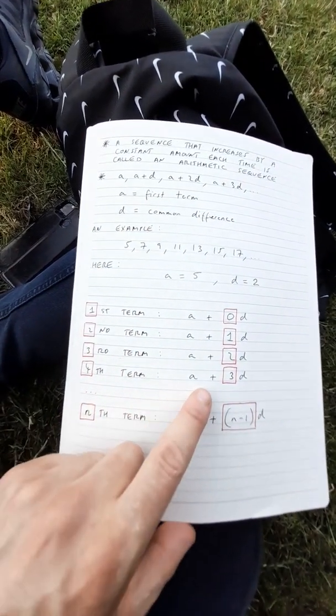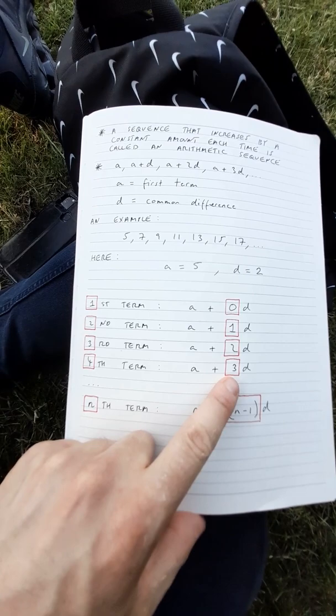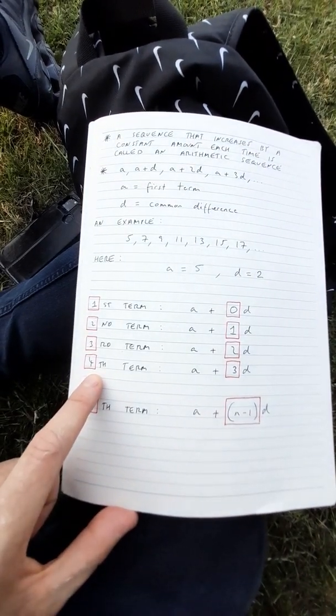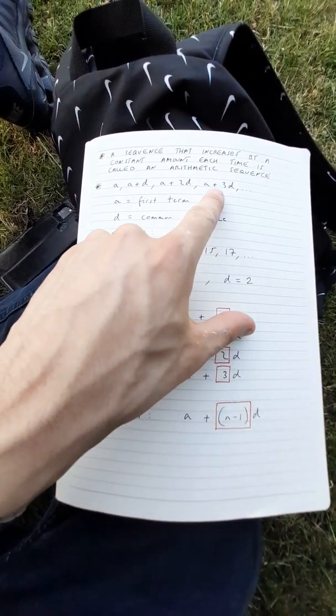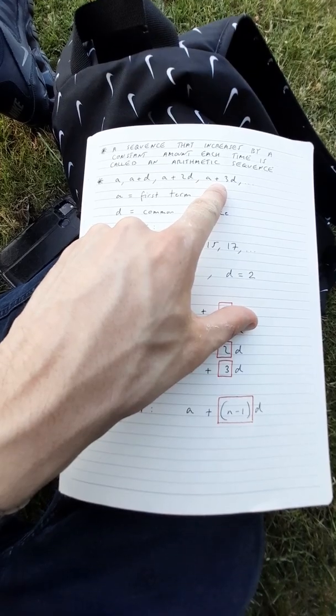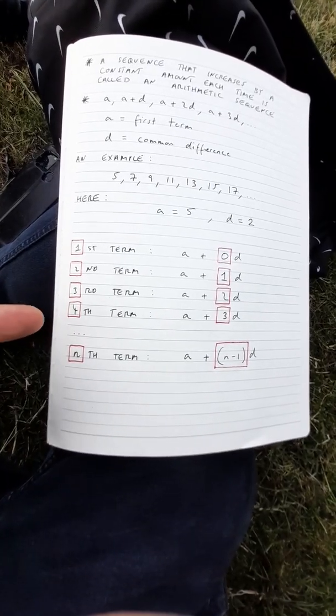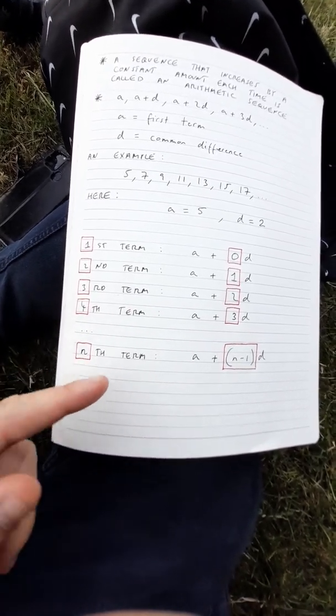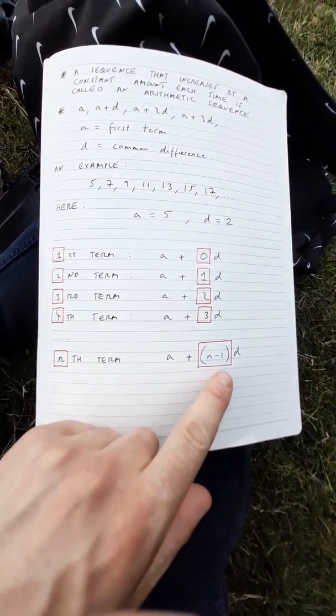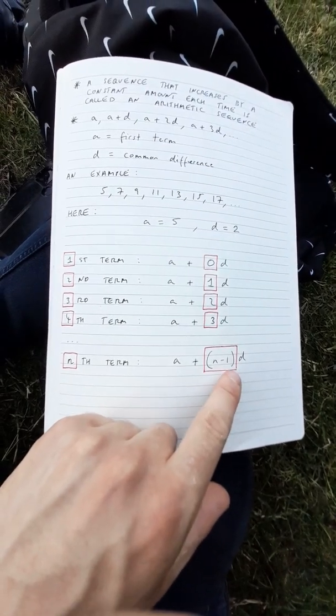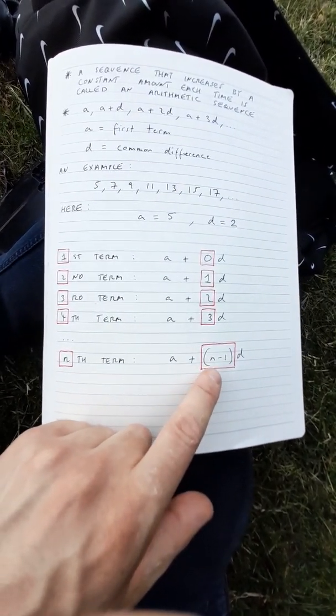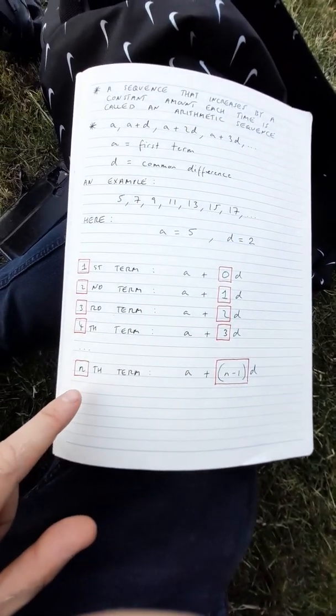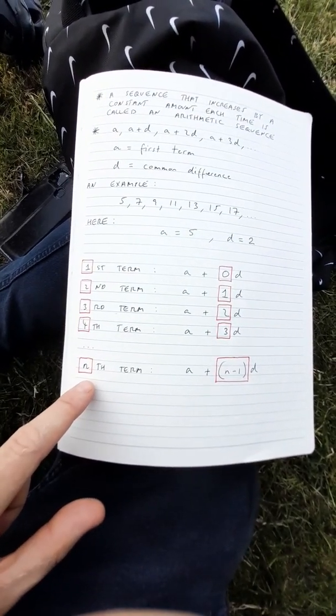The fourth term is a plus 3d and 3 is 1 less than 4. Following the logic that I just explained, it is clear that the nth term has to be a plus n minus 1 times d. That is because n minus 1 is 1 less than n.